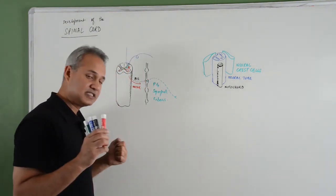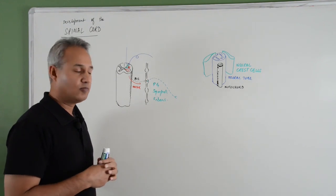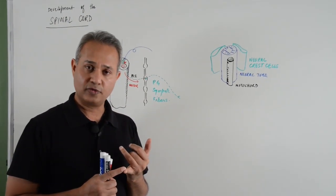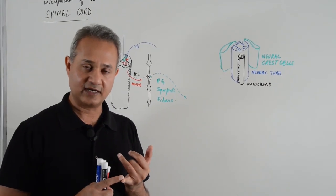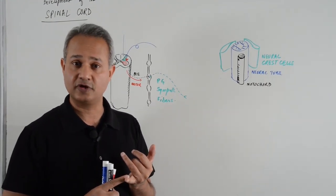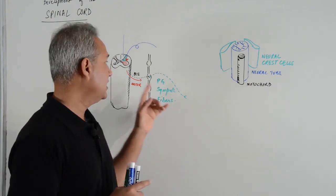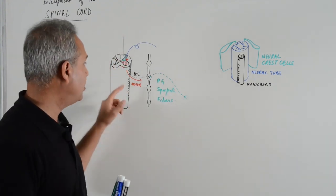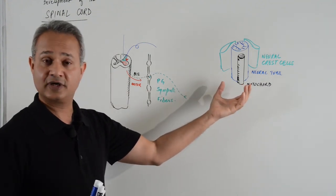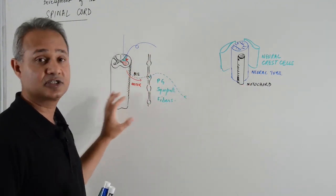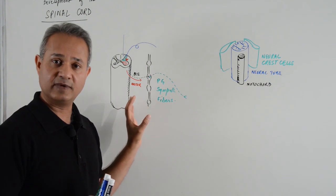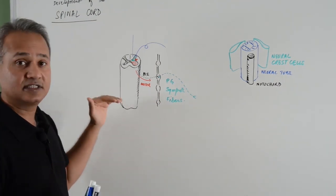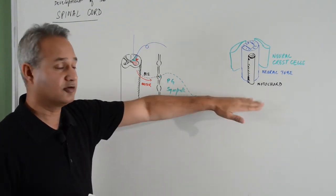From the USMLE steps point of view, most of the time they are going to be concerned about: number one, if the neural pores do not close, how would you detect that; number two, what would be the issue when the neural pores do not close; and number three, when the spinal cord is forming, what part of the neural tube and neural crest cells give rise to various structures associated with the spinal cord. Let us quickly look at the structures we should know, then we will start the embryology.